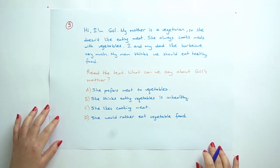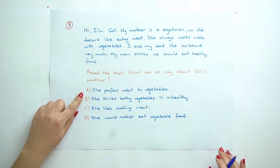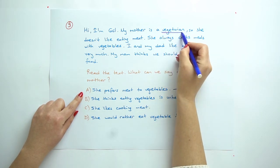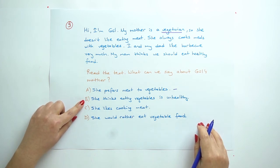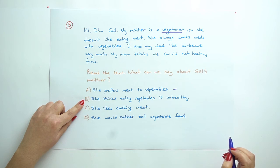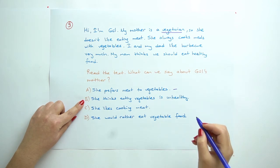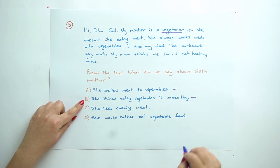Option A: She prefers meat to vegetables. Can we say? No, because she is a vegetarian. B: She thinks eating vegetables is unhealthy. Can we say this one? No, it is healthy.